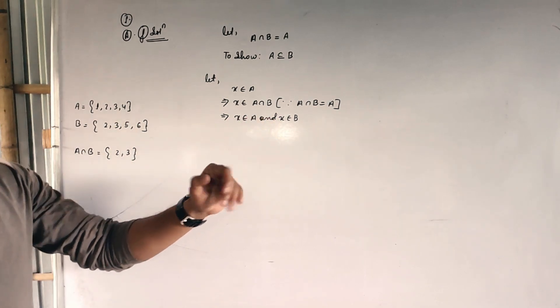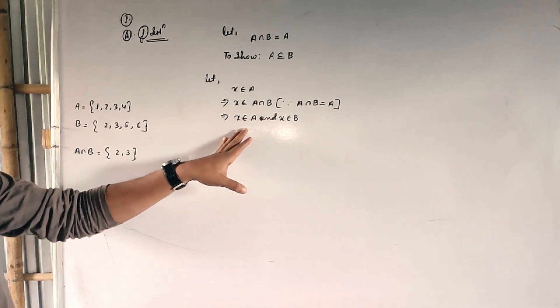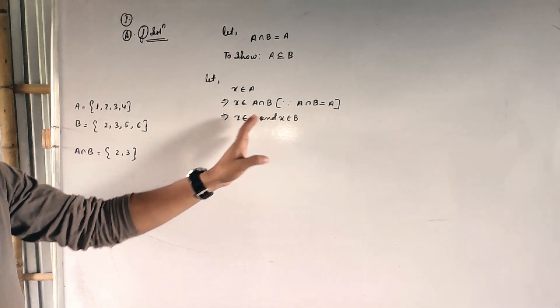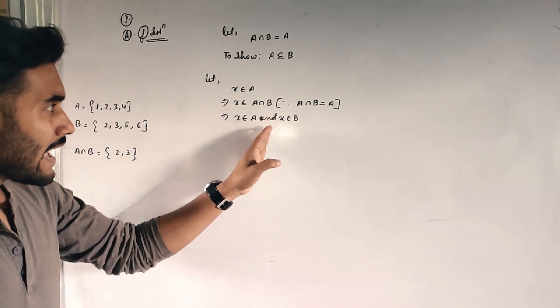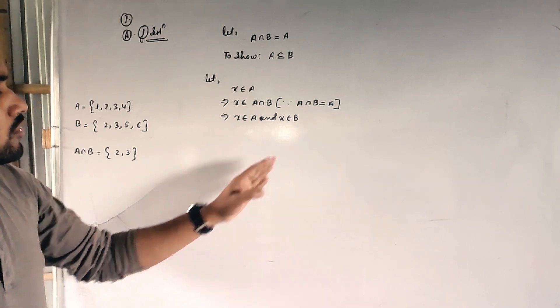X belongs to B. That's why this is the meaning of X belongs to A or is different, or is either in here or there in anyone, or maybe in both also. Doesn't matter, maybe in anyone or in both. But in 'and', it has to be both.